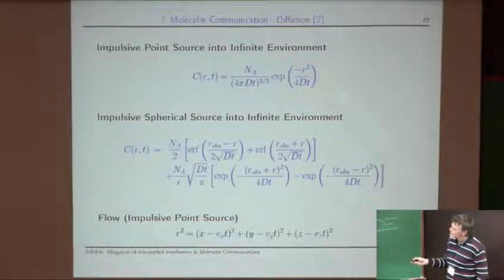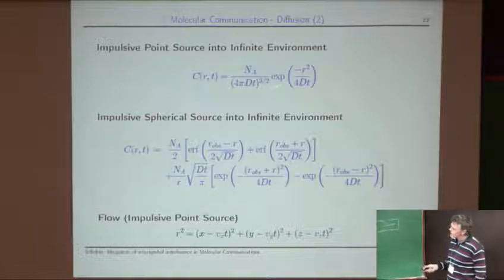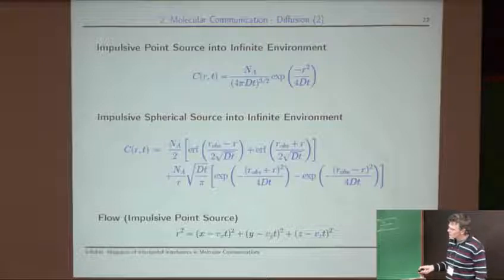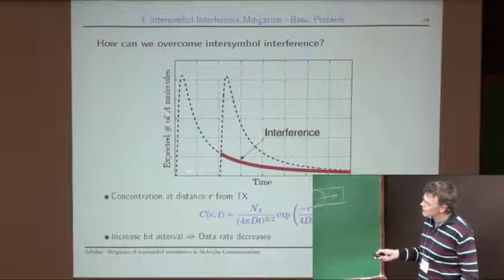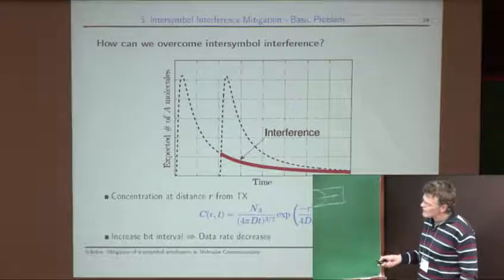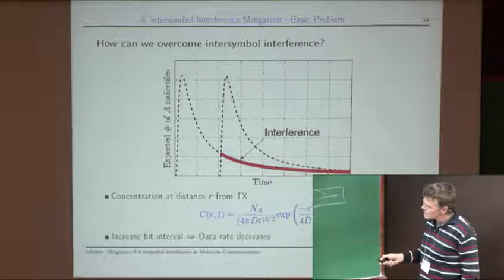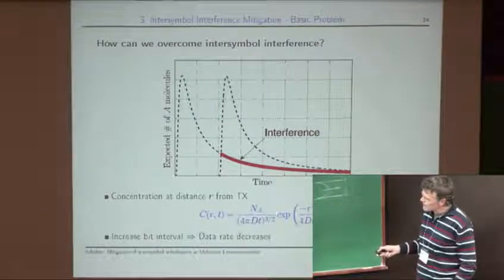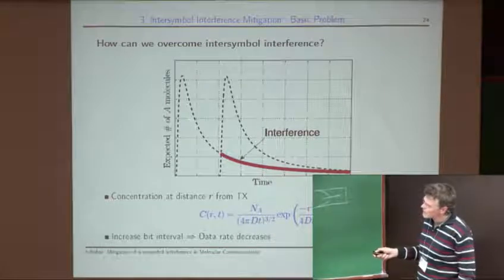In this talk I use the point-source concentration expression as an approximation for any real system. Flow can be incorporated by introducing an effective radius with coordinates x, y, z and corresponding velocities, so we can still use the same equation. Looking at the concentration expression for large time t, the exponential term approaches one and we get a polynomial decay of t to the power minus 3/2 — a very slow decay — which is why we have these long tails and ISI.